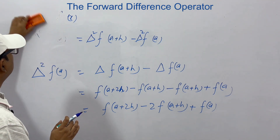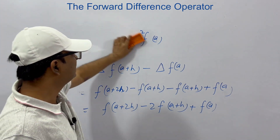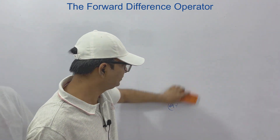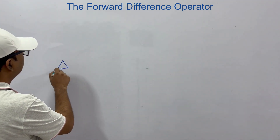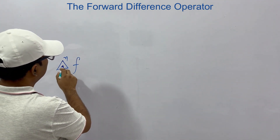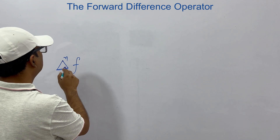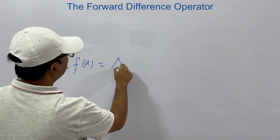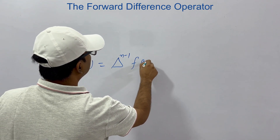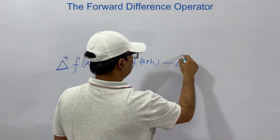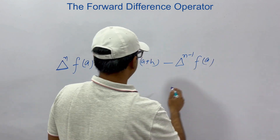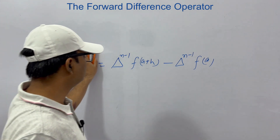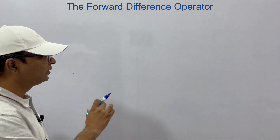So up till now I think things are clear. This is not difficult — just brush it up so that when we proceed you don't get confused. What we saw was that if we take the nth power of the forward operator of f(a), what we actually do is del^(n-1) of f(a+h) minus del^(n-1) of f(a). This is what we were doing in generalized terms. You should keep this expression in mind.